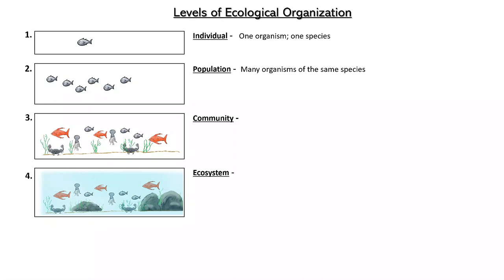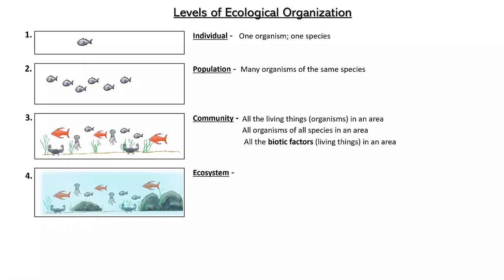Next, it looks like we have the little gray fish, the orange fish, jellyfish, crabs, grass — we have all the living things in a particular area. That's called the community. Another way to think about it: a community is all the biotic, living things in an area.